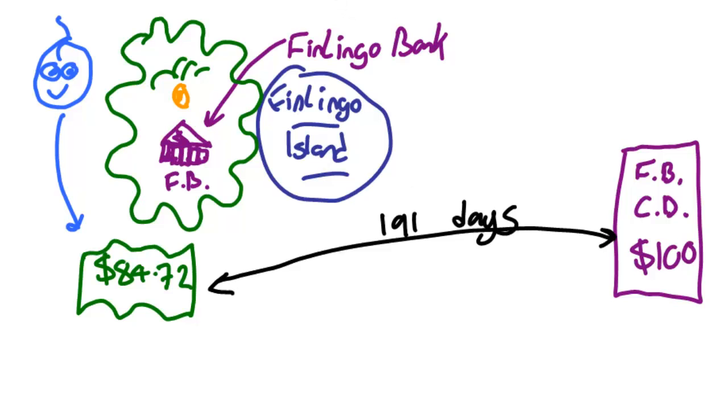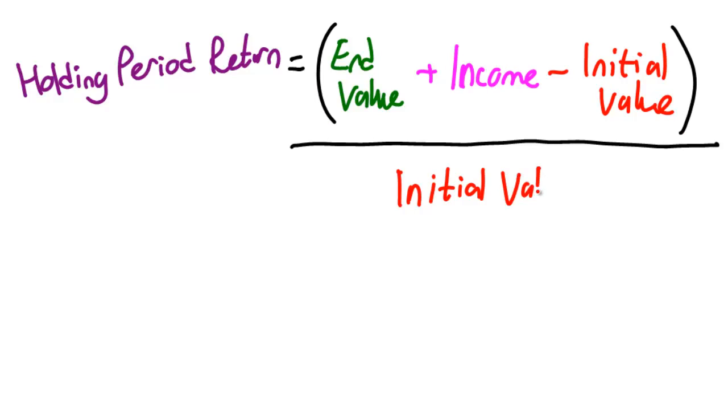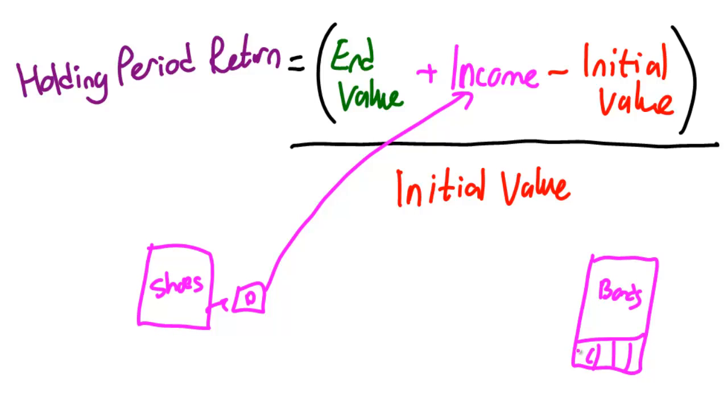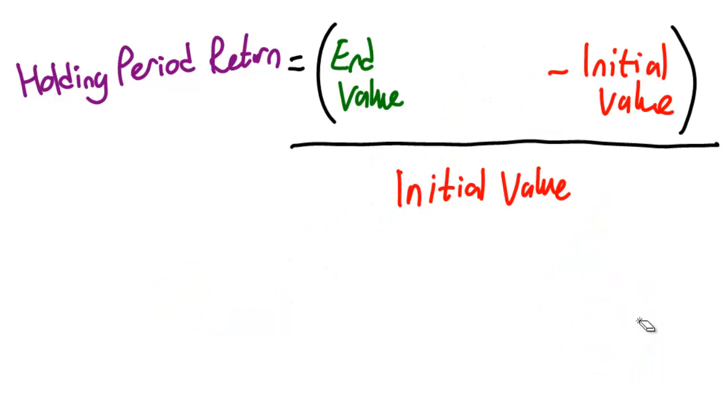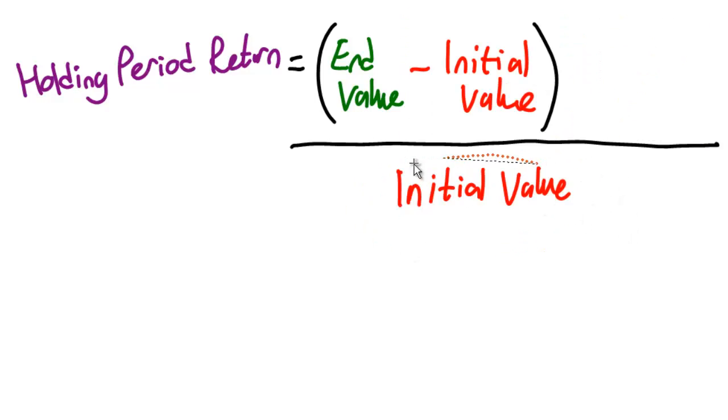To figure out a return, we could just do a simple holding period return. The holding period return equation is usually this: the holding period is equal to the end value plus the income minus the initial value divided by that initial value. The equation does usually hold that term for the income, such as for share dividends and for bond coupons. But fortunately, most money market instruments are just discounted IOU instruments without any cash payment along the way.